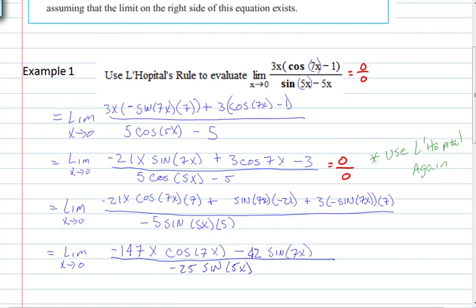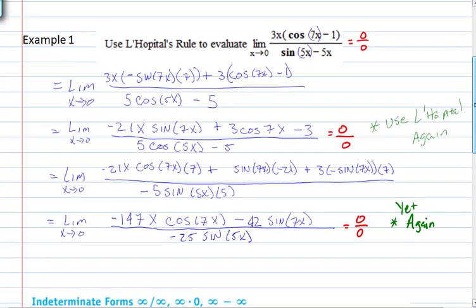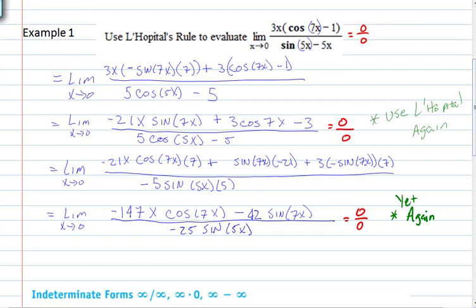By direct substitution, the sine terms go to 0 and we end up with 0 over 0 again — another indeterminate form, so we do L'Hopital's again. As long as you have an indeterminate form it will stop eventually, and soon I think.